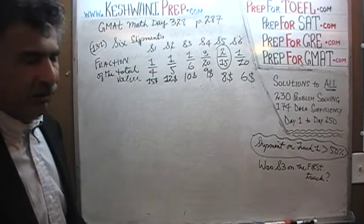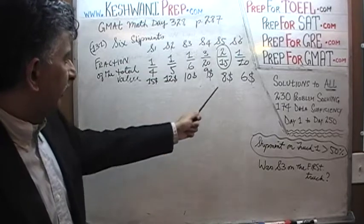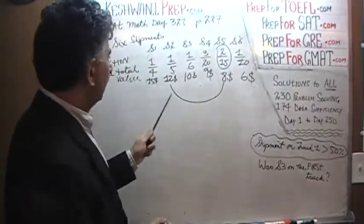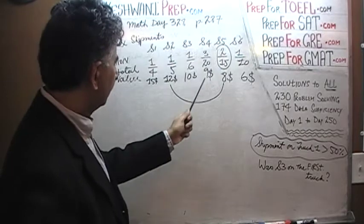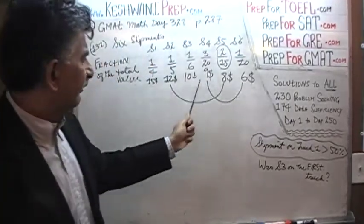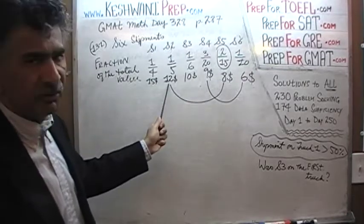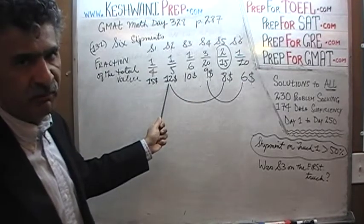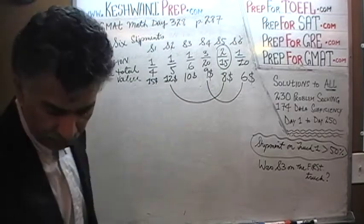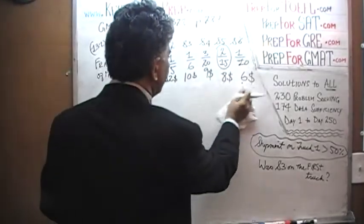We can do a quick addition to make sure our math was correct: 12 plus 8 is 20, 9 plus 6 is 15, 15 plus 10 is 25, and 25 plus 20 is 45, then 45 plus 15 is 60. So it adds up to 60. We are done.